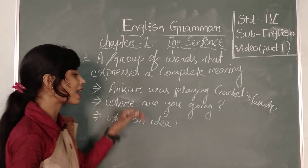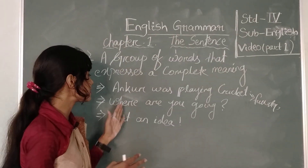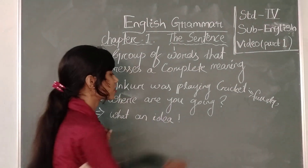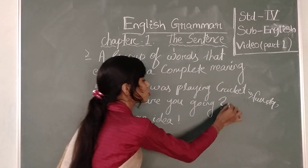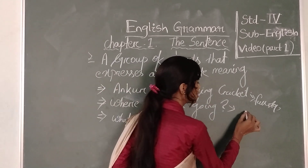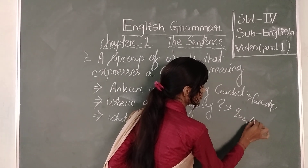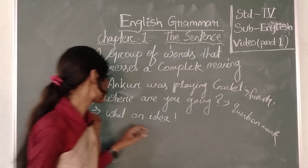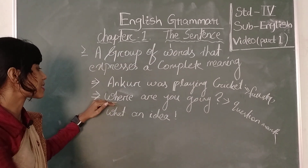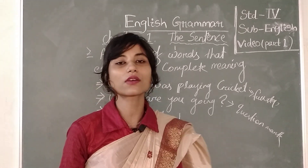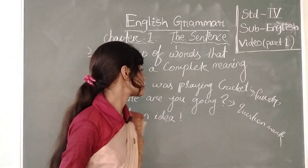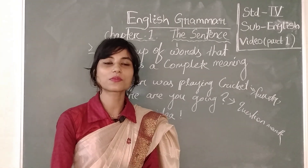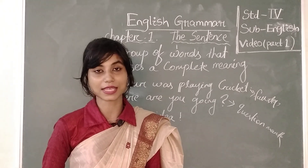You can see the second sentence: 'Where are you going?' This is a question mark sentence — you can call it an interrogative sentence. At the end of the sentence I have put a question mark. How do you recognize question mark sentences? A question starts with a WH word — where, what, how. If a sentence begins with a WH word, you must put a question mark at the end.